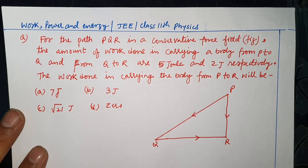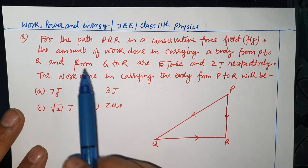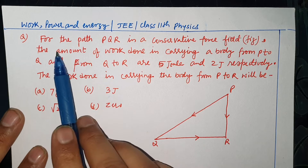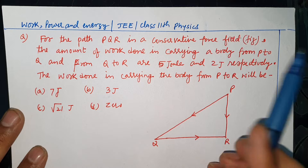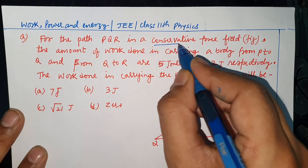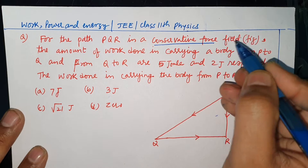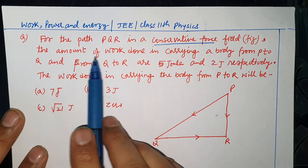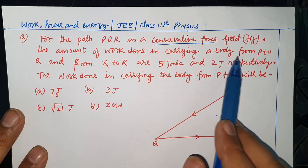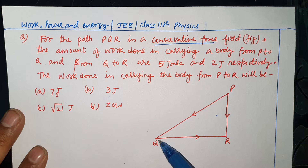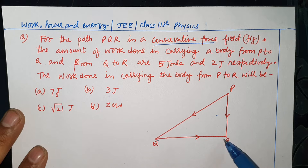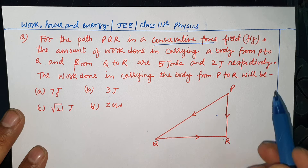Hello dear students, welcome back to my channel Physics SVC. This is a question on work-energy for path PQR in a conservative force. The amount of work done in carrying a body from P to Q and from Q to R is 5 joule and 2 joule respectively.